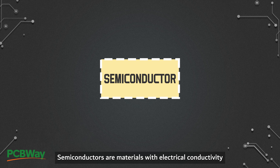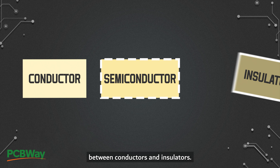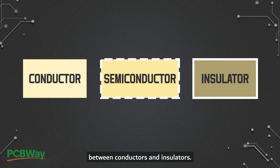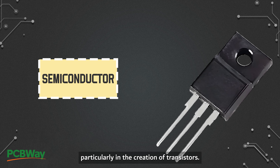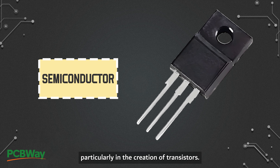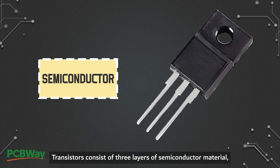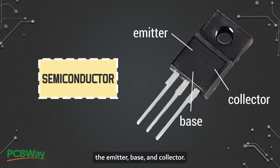Semiconductors are materials with electrical conductivity between conductors and insulators. They form the foundation of modern electronics, particularly in the creation of transistors. Transistors consist of three layers of semiconductor material: the emitter, base, and collector.